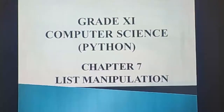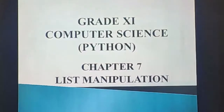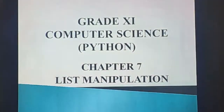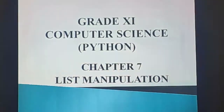Good morning students. This is Grade 11 Computer Science, Chapter 7. The chapter name is List Manipulation. Up to last class, we discussed about Chapter 5, String Manipulation.